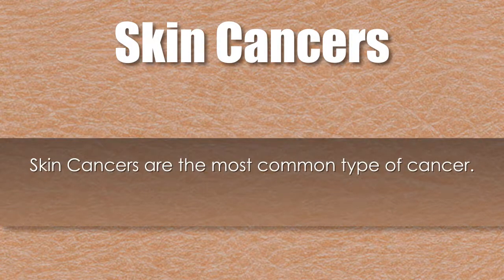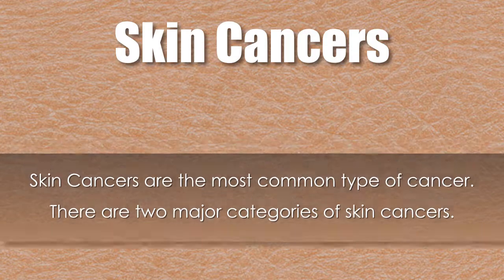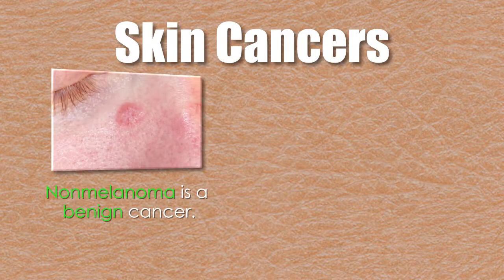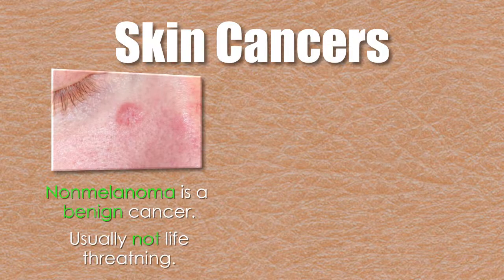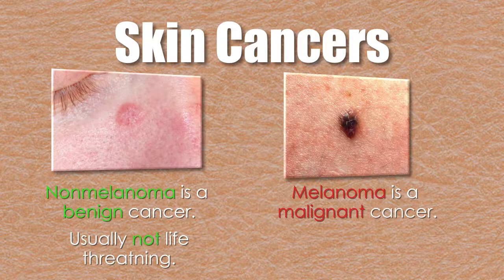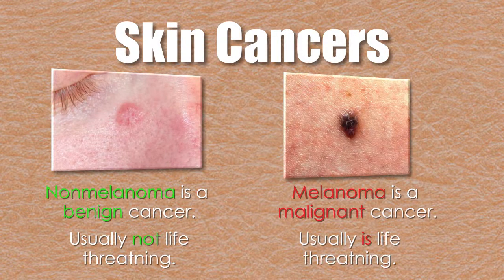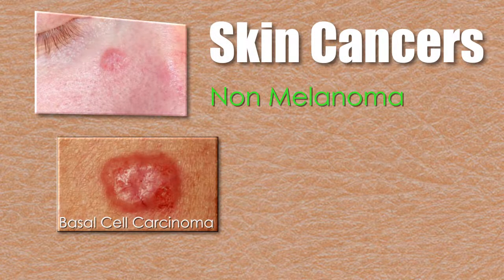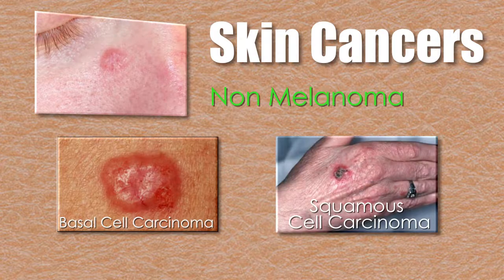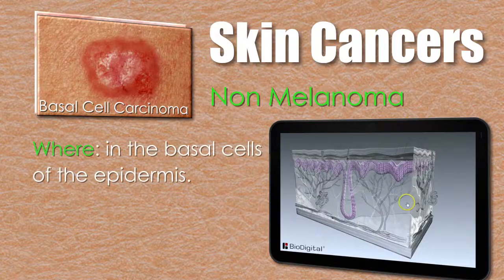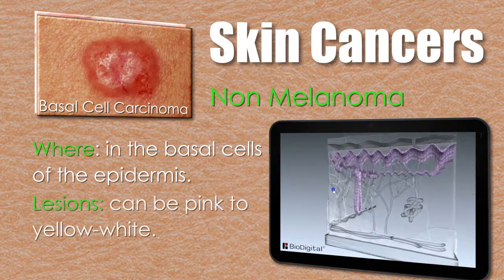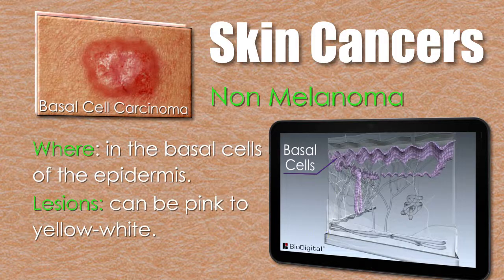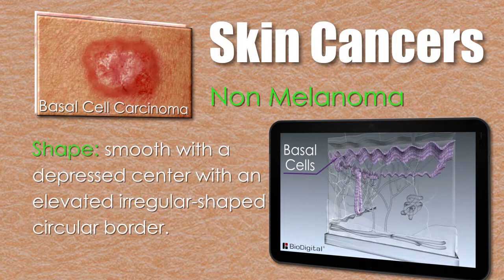Skin cancers are the most common types of cancer. There are two major categories: non-melanoma, which is a benign cancer and usually not life-threatening, and melanoma, which is a malignant cancer and usually life-threatening. Basal cell carcinoma is found in the basal cells of the epidermis; the lesions can be pink to yellow-white, smooth with a depressed center and an elevated, irregular-shaped circular border.